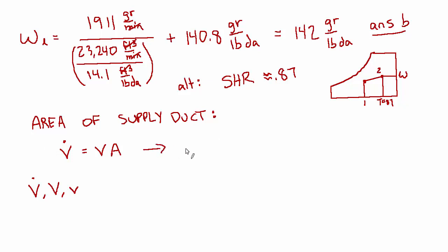If we rearrange this to solve for area, area equals volume flow rate divided by velocity. The volume flow rate is 23,240 cubic feet per minute divided by the velocity, which is 140 feet per minute. The minutes cancel and this feet cancels with one of these feet, so you end up with feet squared. The answer is 166 feet squared, and that's answer C.